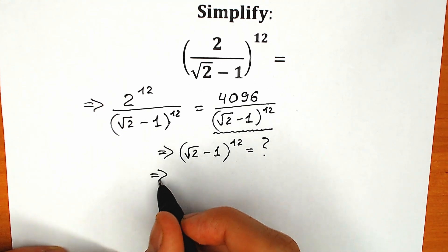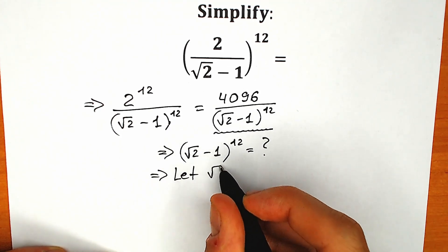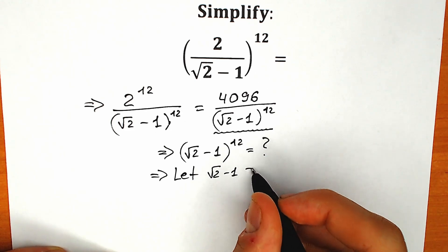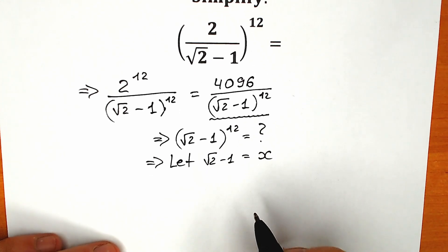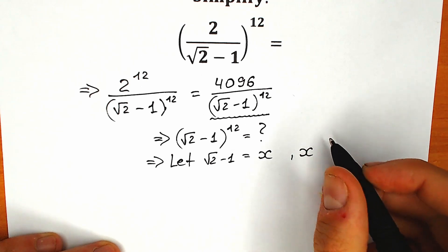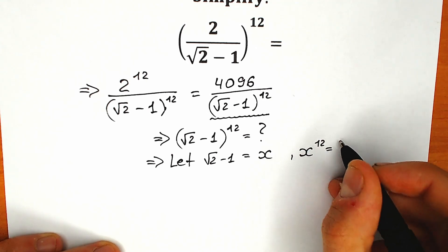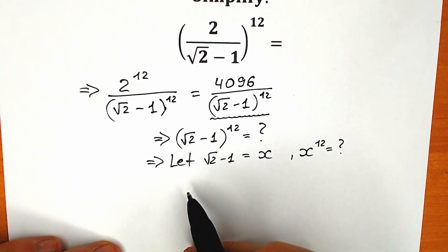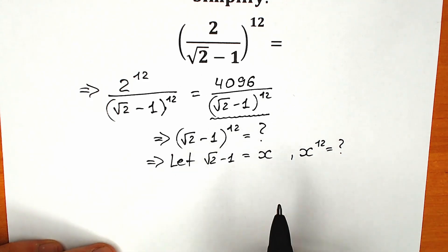First of all, let's call square root of 2 minus 1 as x. This is equal to x. So then we need to find x to the power 12, because this expression inside the parenthesis is equal to x. So we need to find x to the power 12.